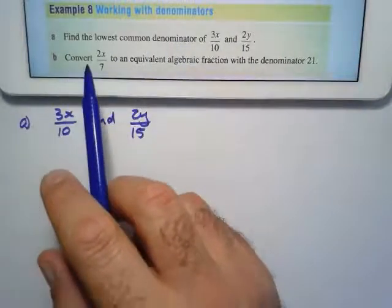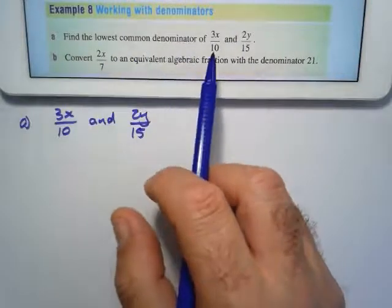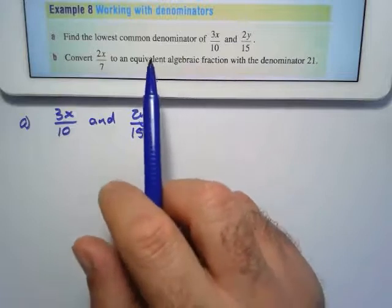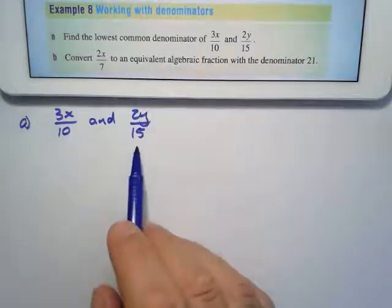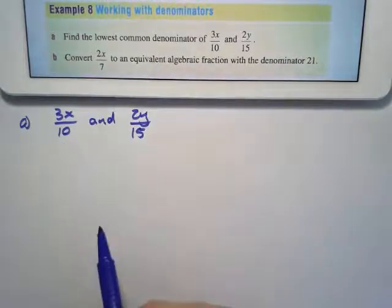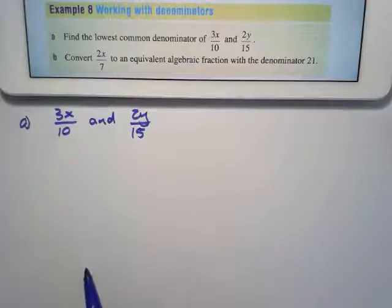Working with denominators. Find the lowest common denominator of 3x over 10 and 2y over 15. So we're looking at 10 and 15, and again this is just revision. You have done this previously.